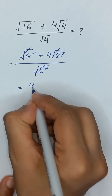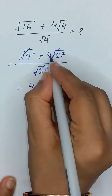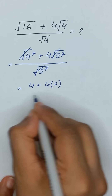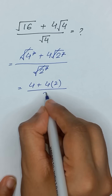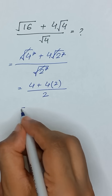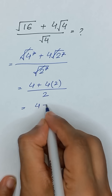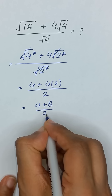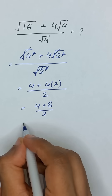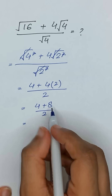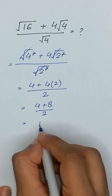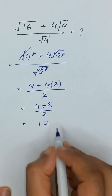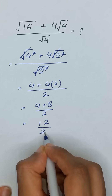It will become 4 plus 4 times 2 divided by 2. It will become 4 plus 4 times 8 divided by 2. Now, 8 plus 4 will be equal to 12 divided by 2.